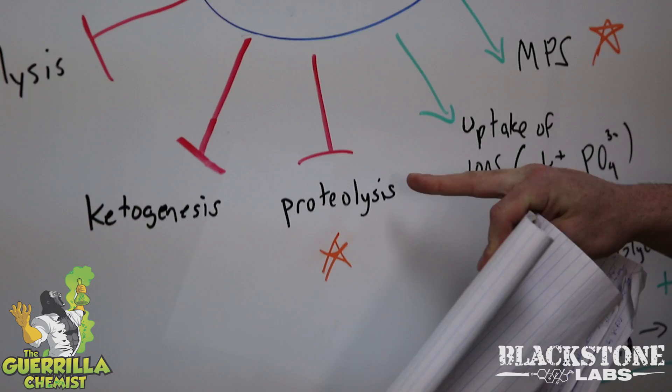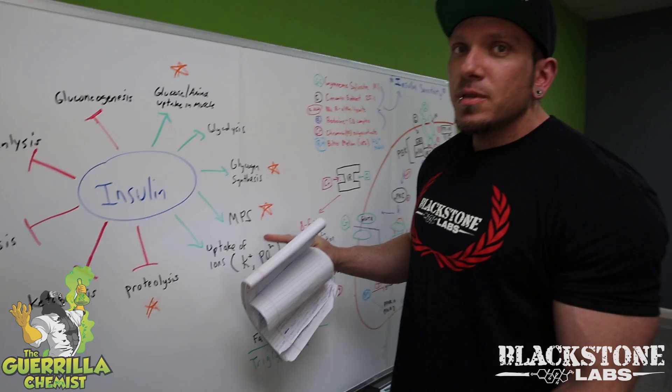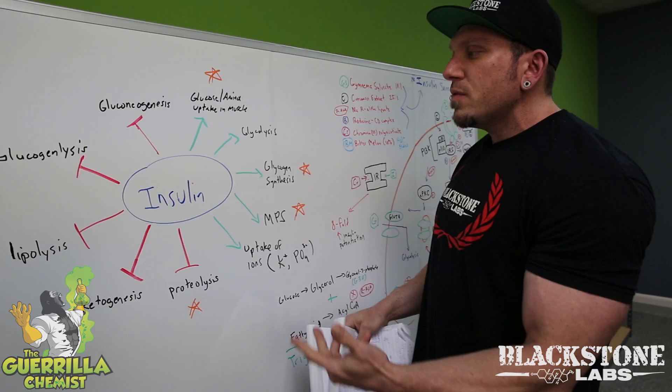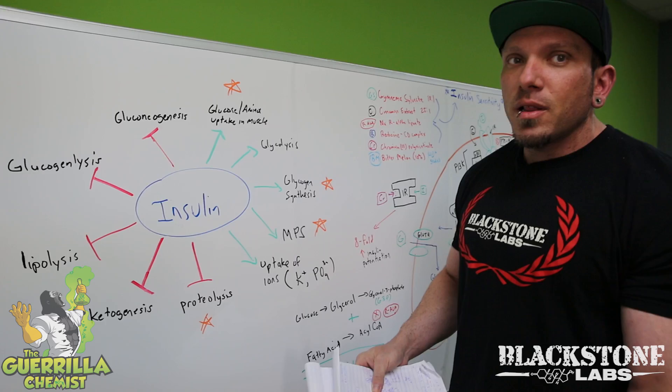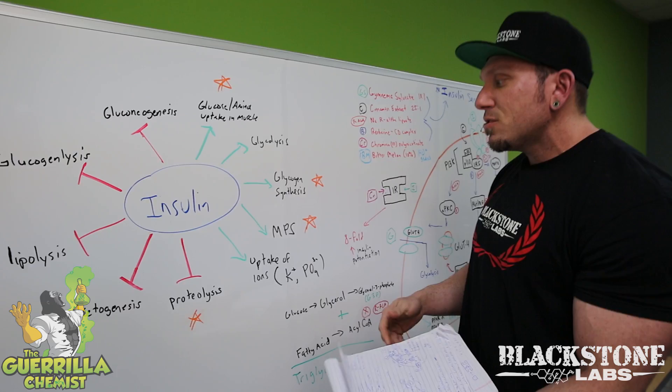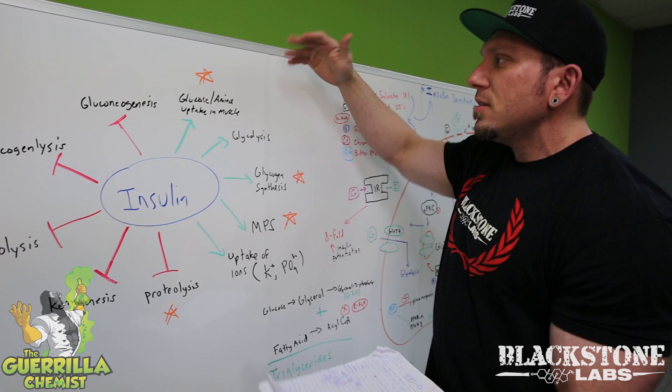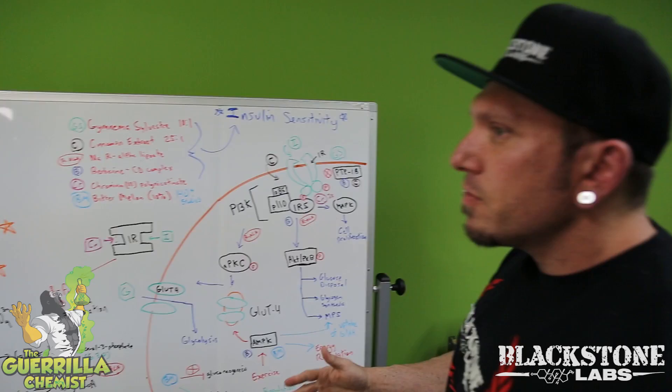For bodybuilding purposes, some of those are particularly beneficial. Proteolysis is the breaking down of muscle tissue, so one of the things insulin does is prevent the breakdown of muscle tissue — it's very anti-catabolic. It's also extremely anabolic as it increases the uptake of glucose and amino acids into your muscles, increasing total body protein synthesis. So let's go over how insulin works in the body.